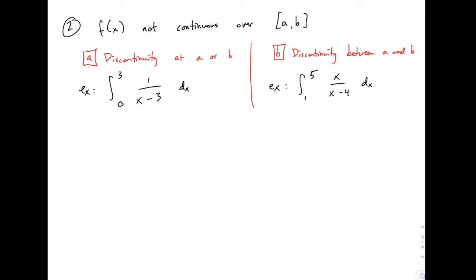So this, it turns out, we can divide into two categories where the discontinuity could occur at one of the boundaries of the interval at either A or B, meaning at either the lower or upper limit of integration. And for example, here I have the integral from 0 to 3 of 1 over x minus 3, which has a discontinuity at 3. If you try plugging in 3 for x, you'll end up dividing by 0. That function is undefined there.